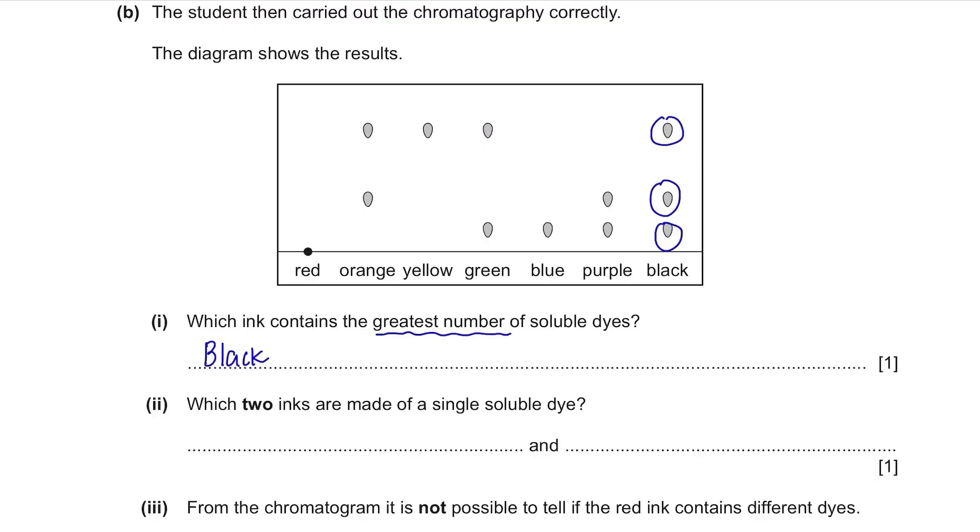Which two inks are made of a single soluble dye? If it's made of a single dye, it needs to consist of only one spot. So the answer is yellow and blue, both with just one spot.